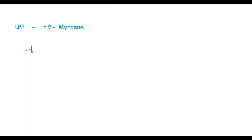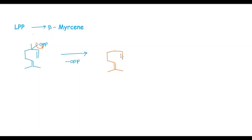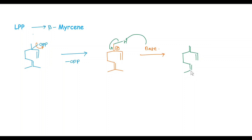Next we will see the synthesis of beta-myrcene from LPP. The first step is loss of OPP from LPP, and we get a carbocation. In the next step, on treatment with base, a proton is abstracted by the base and there is formation of a double bond. We get a double bond and these two methyl groups. This product is called beta-myrcene.